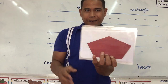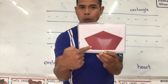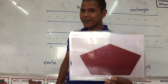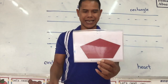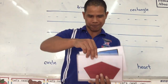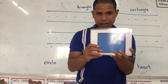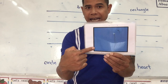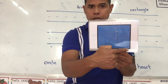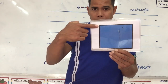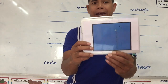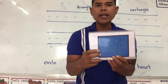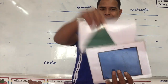This one has five sides — one, two, three, four, five. It is called a pentagon. Okay, this one has four sides that are all equal. It is called a square.